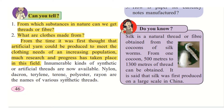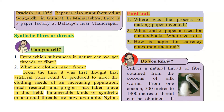After a lot of research and progress, there are many types of artificial yarns now made. Innumerable kinds of synthetic, that is artificial, threads are now available. Some of them are Nylon, Dacron, Terlin, Terrine, Polyester, and Rayon — these are the names of various synthetic threads.